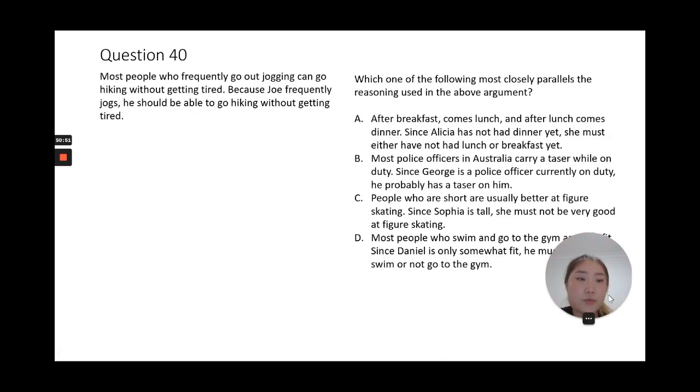And last one. This one, the reasoning, the structure of the argument: most people who frequently go out jogging can hike without getting tired. Because Joe frequently jogs, he should be able to go hiking without getting tired. So the statement paralleling the structure is most people who do X are Y, or can do Y. Since this person is X, they probably can do Y.